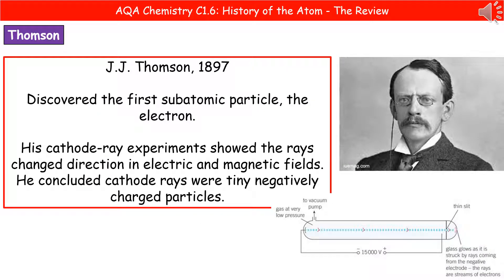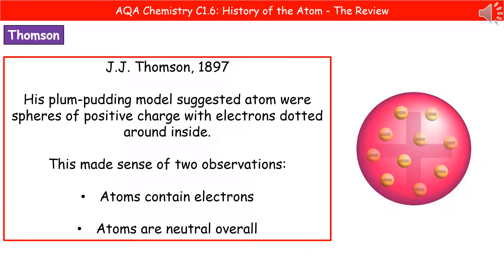The second scientist we need to remember the name of is J.J. Thomson in 1897. What he actually contributed was that he discovered the first subatomic particle, which was the electron. To discover that, he carried out cathode ray experiments, which showed that the rays changed direction in electric and magnetic fields. He then decided that the cathode rays were actually tiny, negatively charged particles, and he went on to suggest a new model for what the atom looked like, referred to as the plum pudding model.